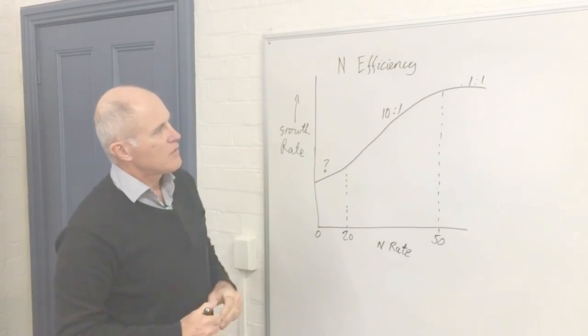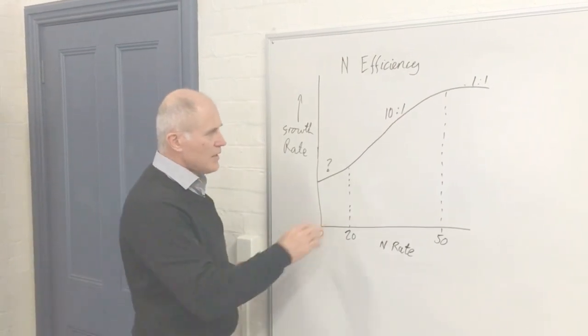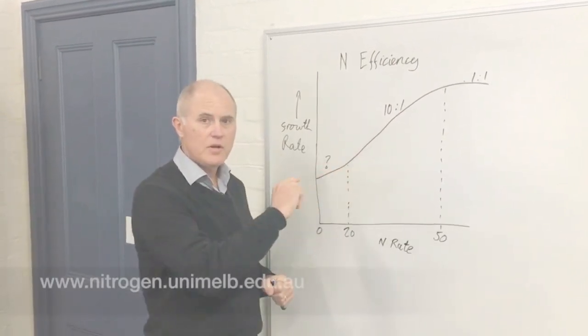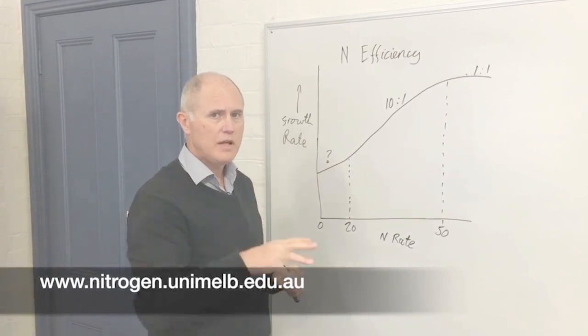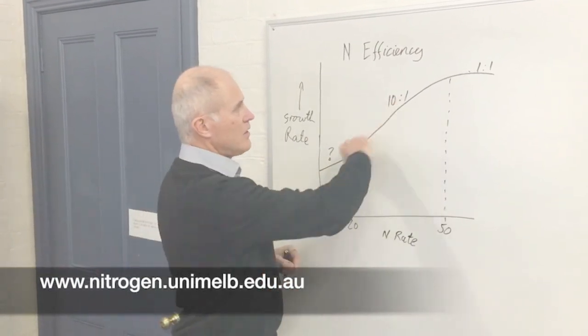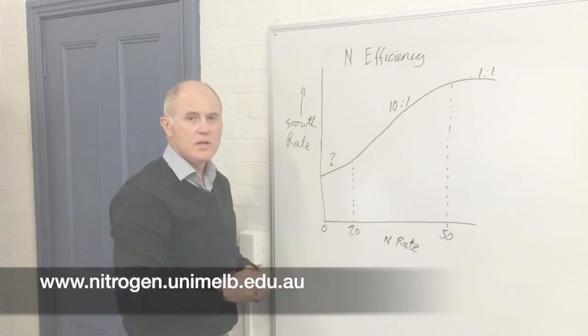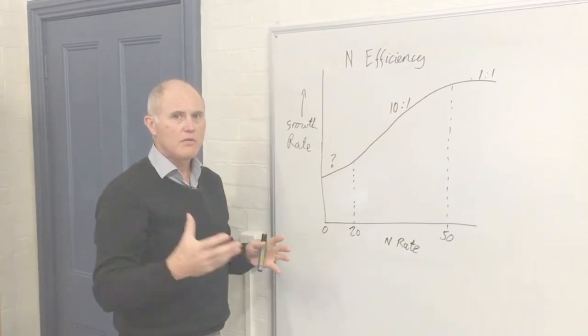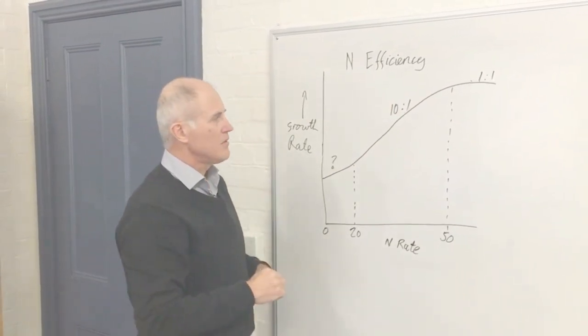So the slope of that line is really important. There are tables you can look up on the nitrogen.unimelb.edu.au website that will tell you what that likely response will be to nitrogen at each month of the year for different regions in southeastern Australia.